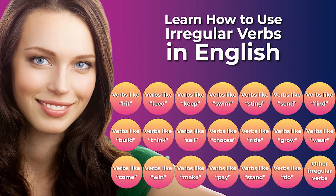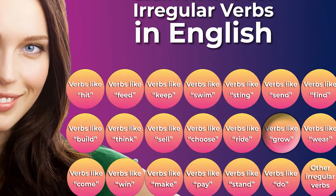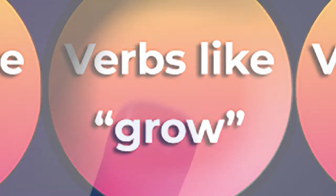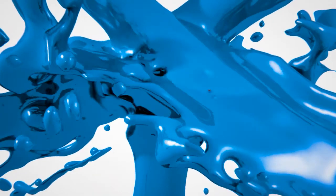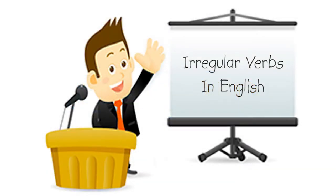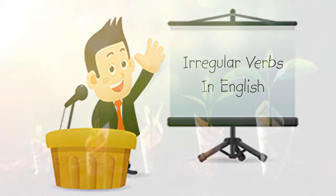These 21 short videos will help you quickly see and understand the relationships and patterns among various types of irregular verbs in English so that you can use them correctly. This video will help you see relationships among various types of irregular verbs in English. The key to understanding irregular verbs is to look for and notice the patterns.